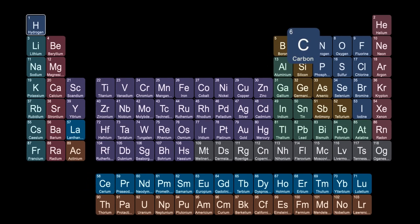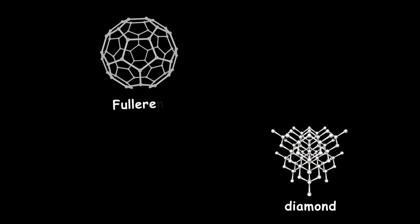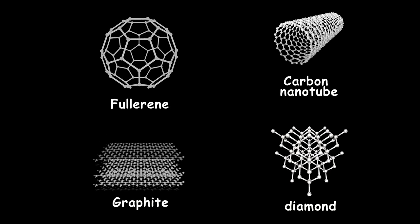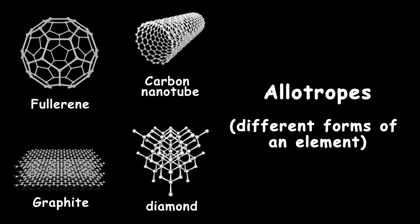Carbon element is one of the most important elements in nature, and you can find it in different forms like diamond, fullerene, carbon nanotube or graphite, which are allotropes of carbon.